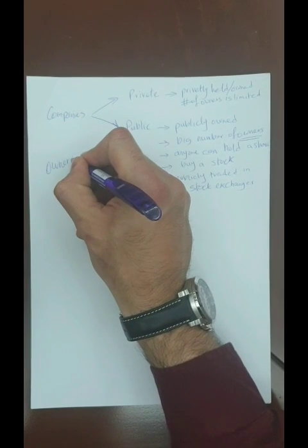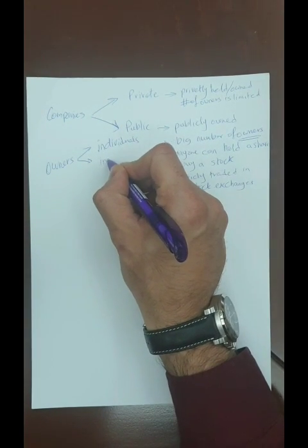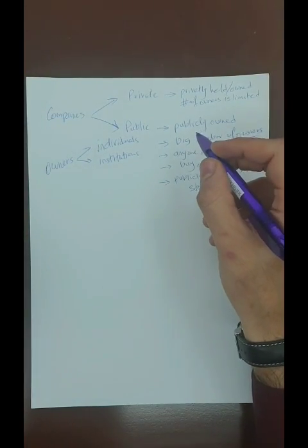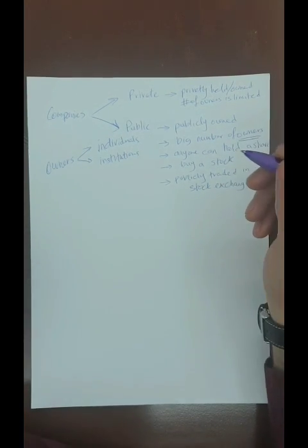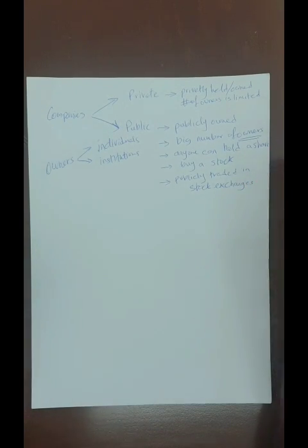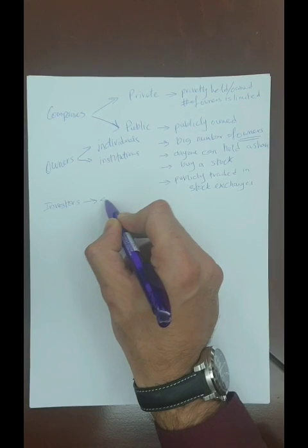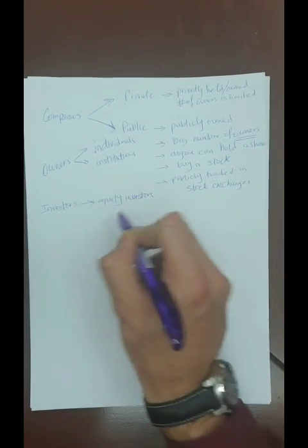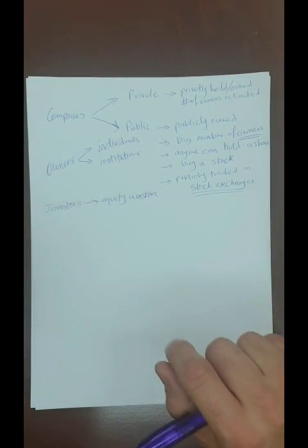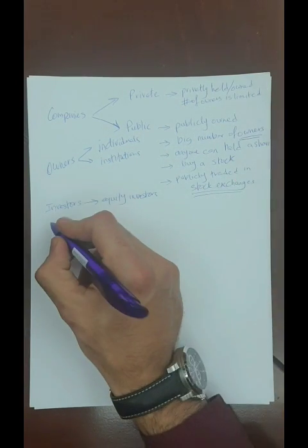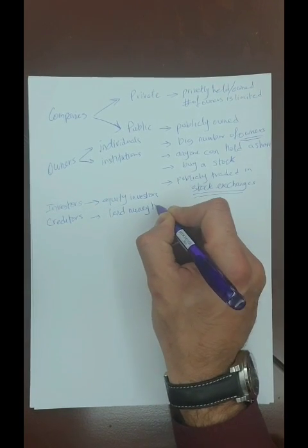When we say institutions in the context of owners or investors, we're talking about banks, hedge funds, investment funds, and so on. Before moving to the economic role of financial accounting, I'd like to introduce a key concept: investors are usually referred to as equity investors — people who buy stocks in the company and own a share or portion of it. When a bank lends money to a company, the bank is called a creditor; creditors lend funds to corporations in return for interest.